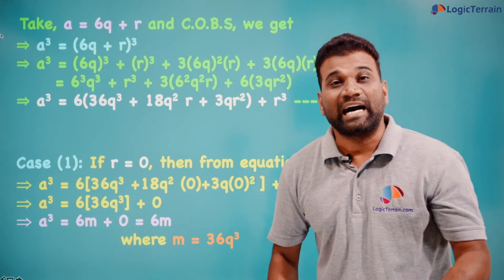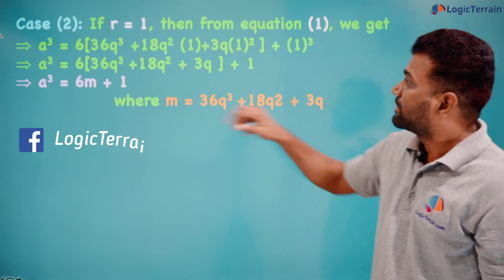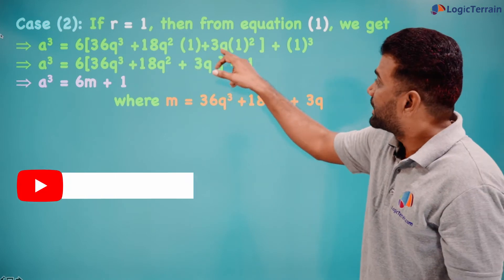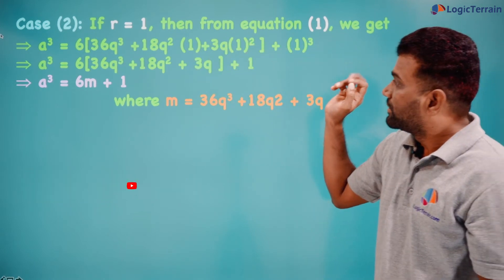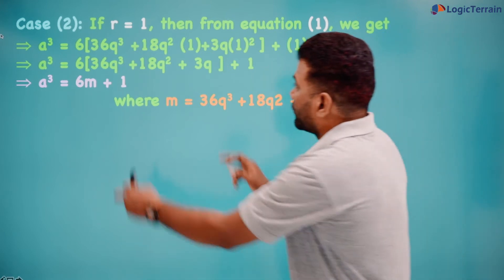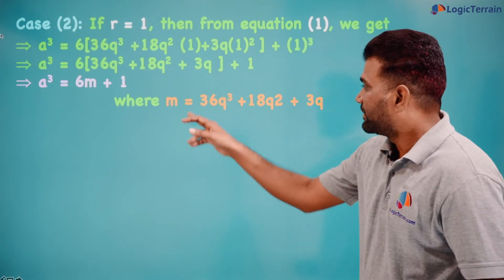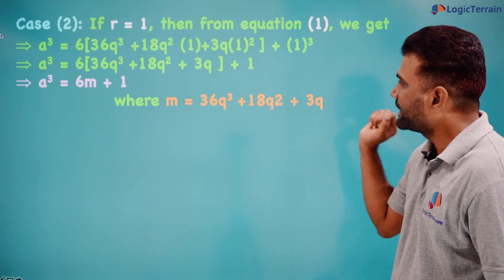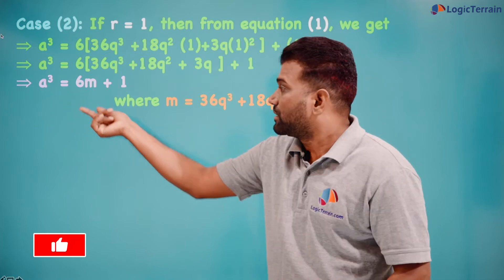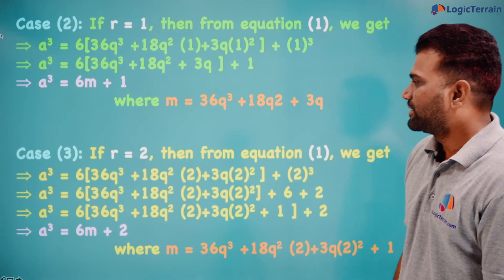Case 2: if r = 1, substituting into Equation 1 gives a³ = 6(36q³ + 18q² + 3q) + 1³, which is 6(36q³ + 18q² + 3q) + 1. This can be written as a³ = 6m + 1, where m = 36q³ + 18q² + 3q. So the cube of the positive integer is of the form 6m + r, here r is 1.